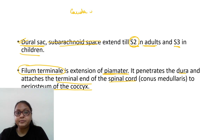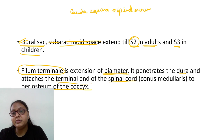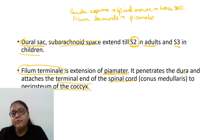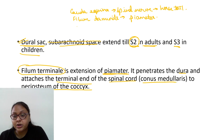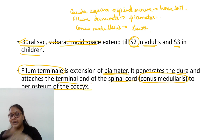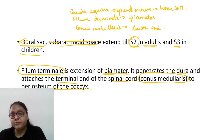Cauda equina refers to the lower lumbar and sacral spinal nerves which give a horse-tail-like appearance. The filum terminale is an extension of the pia mater that anchors the spinal cord to the periosteum of the coccyx. The conus medullaris is simply the lower or terminal end of the spinal cord.